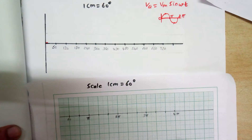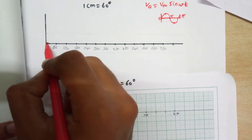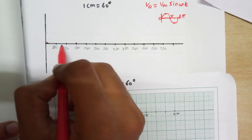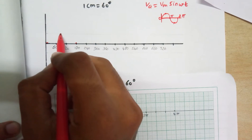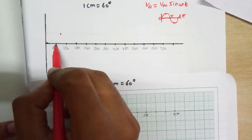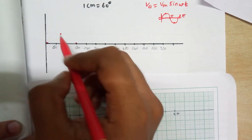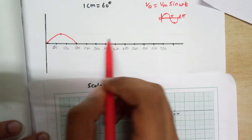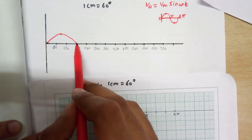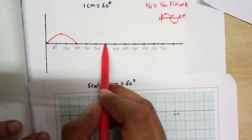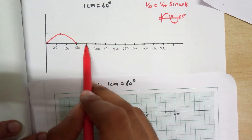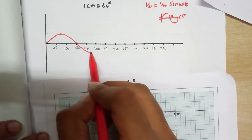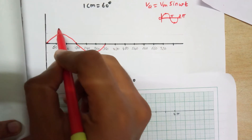So we can start drawing Va. Va will start from 0 degrees and end at pi, and it will have a peak point between 60 degrees and 120 degrees — approximately at 1.5 cm. After 1.5 cm there will be a peak point, so this will be the top part. The bottom part also starts from pi and ends at 2 pi, and it will also have a peak point after 1.5 cm. Now connect the starting point, peak point, and ending point. This is our Va.